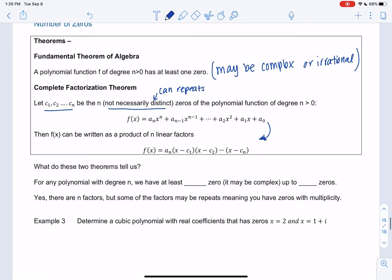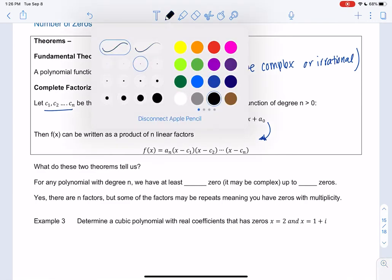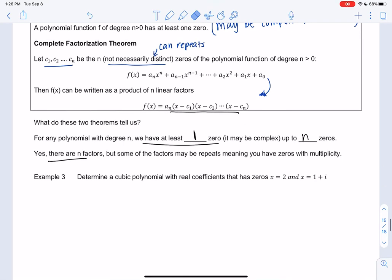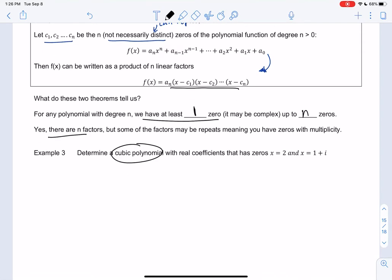So what does this theorem tell us? It tells us, just to kind of summarize it, that we have at least one 0 for all polynomials, but we could have up to n different 0s. So there will be n factors. There's always n of these, but some of them might be repeats. So let's find a polynomial, a cubic polynomial, with real coefficients that has 0s x equals 2 and x equals 1 plus i.